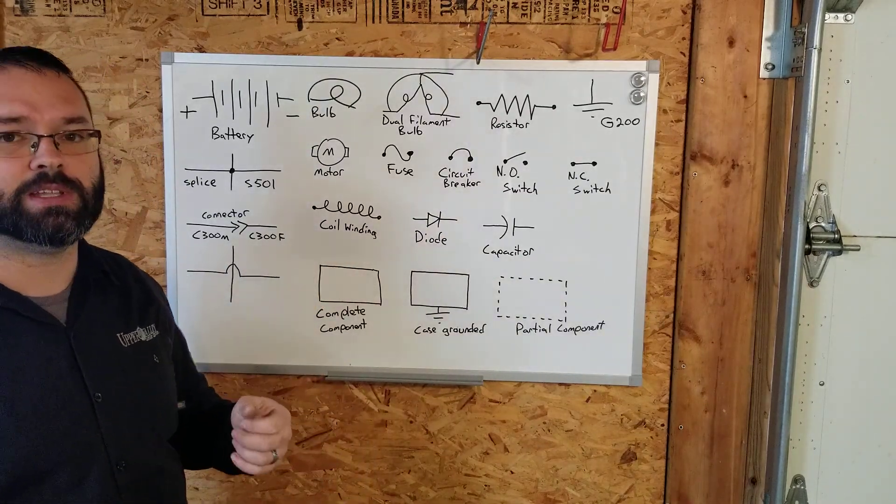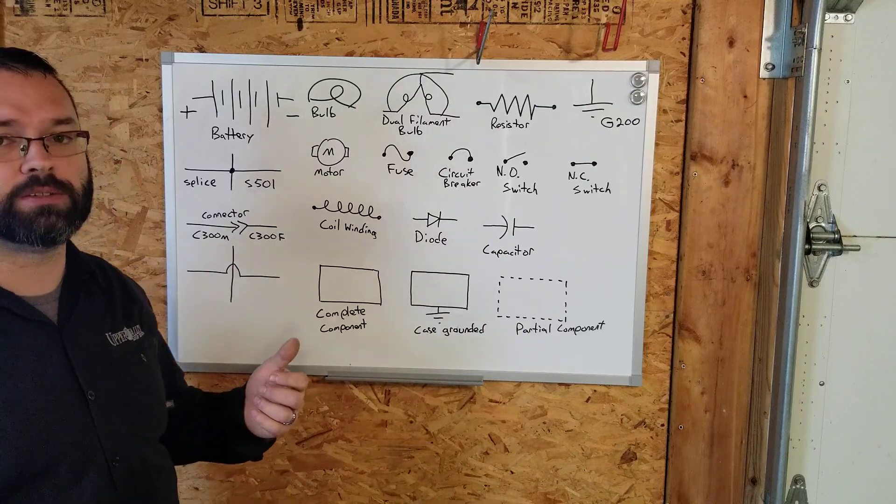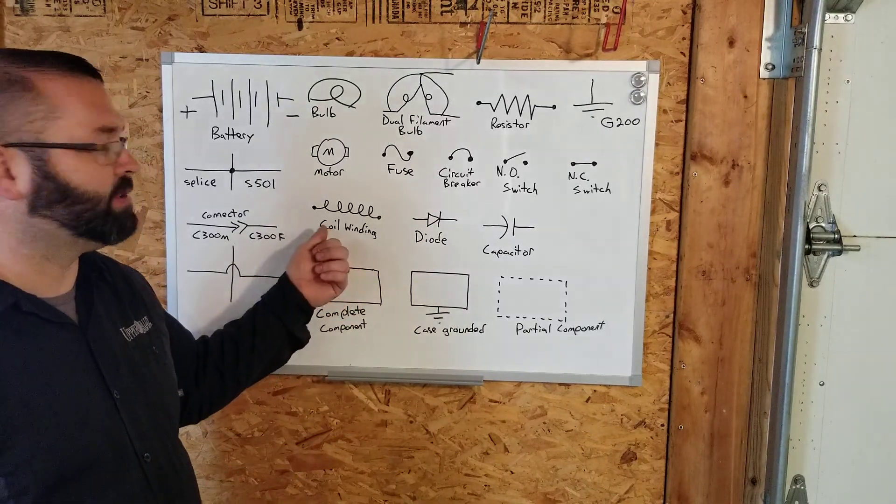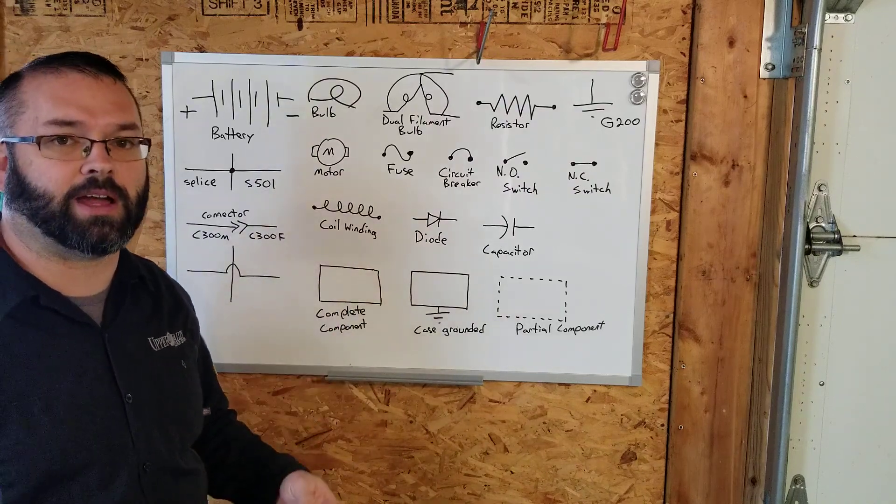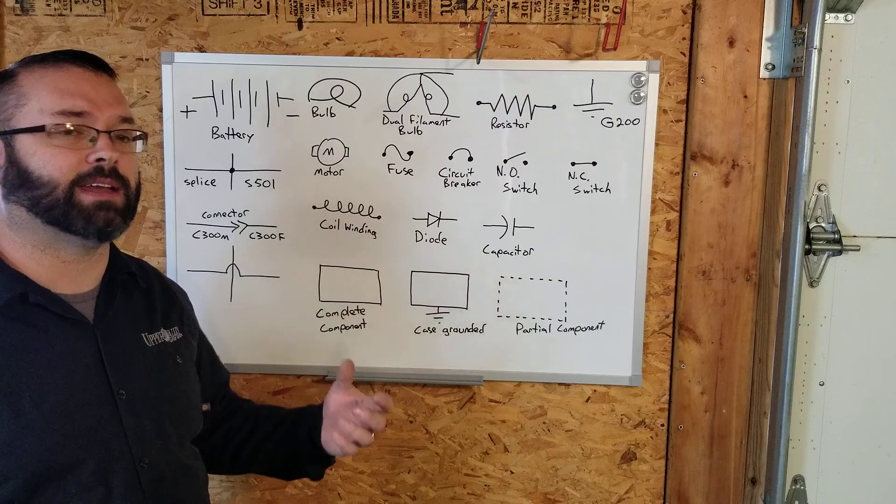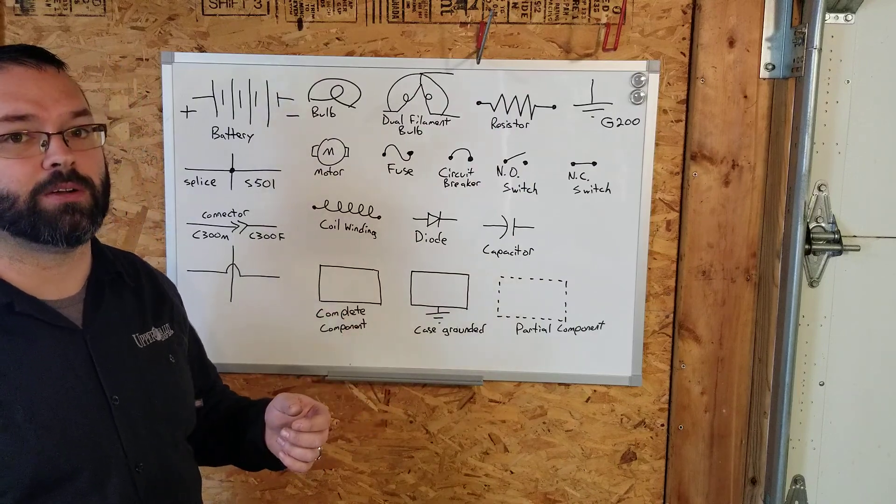Coil windings. We'll see these in fuel injectors, starter circuits on the solenoid. This is a coil winding. It's a winding of copper, usually around an iron core, which creates an electromagnet. We'll talk about electromagnets more later also.